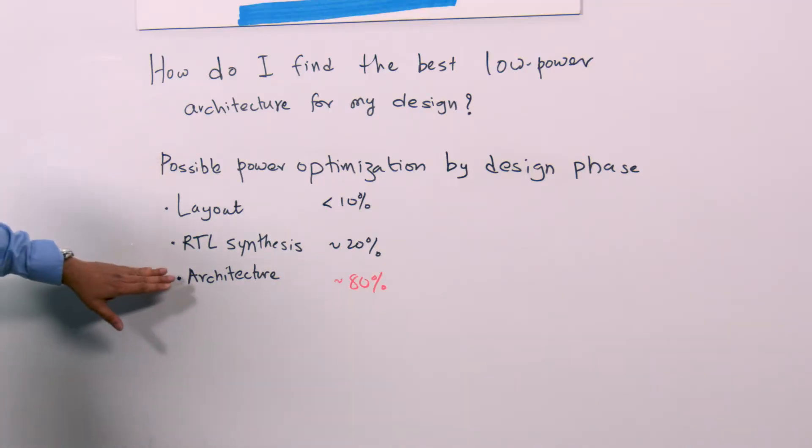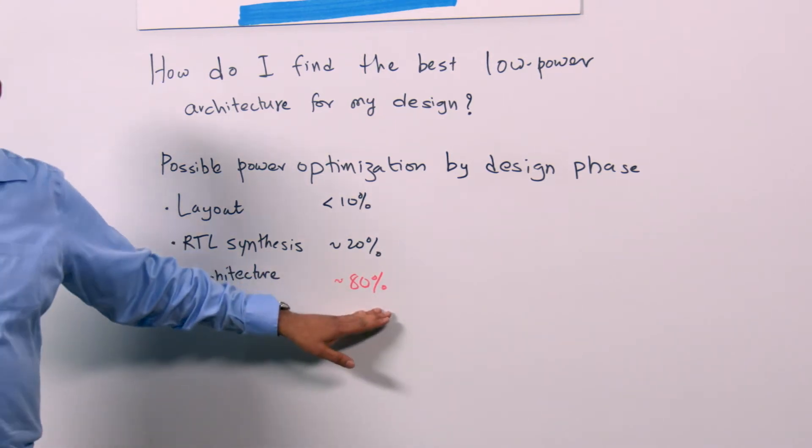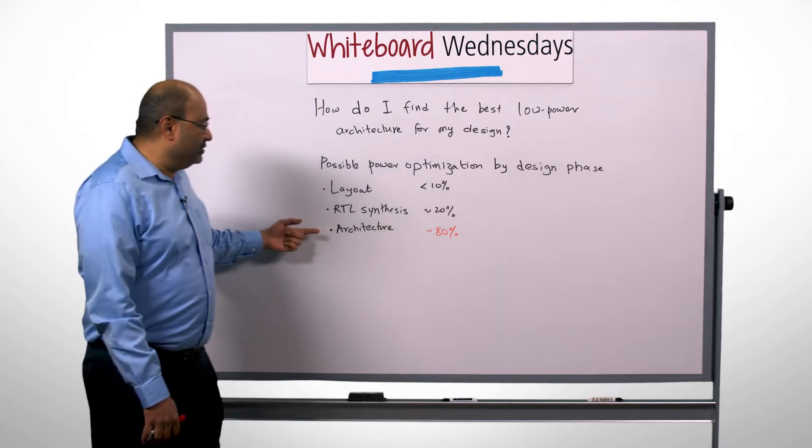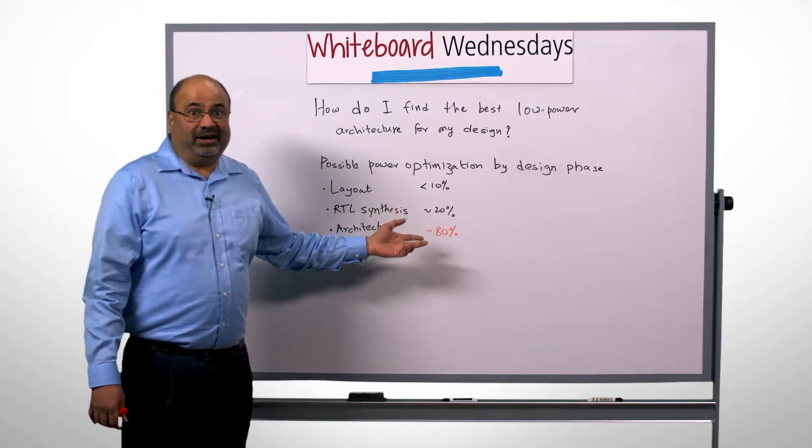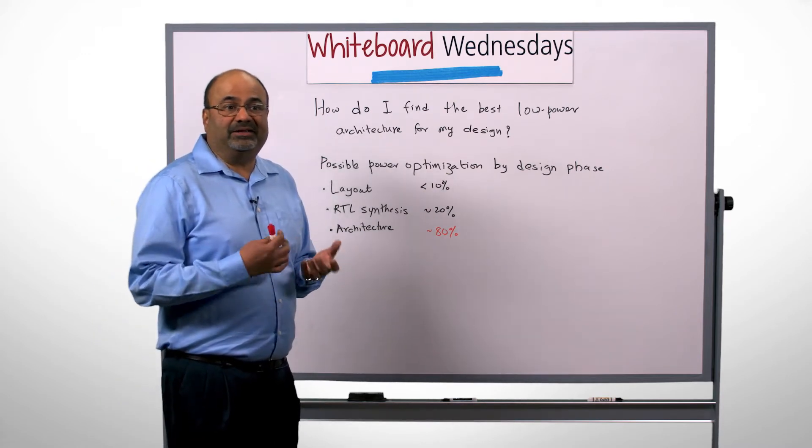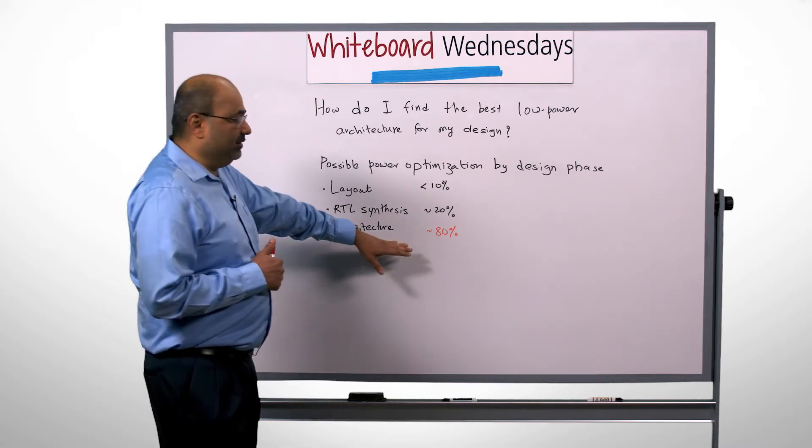But if you're in the architectural phase, the choices you make in this phase affect the power by up to 80%. So if you make a wrong choice of architecture in your design, you might miss your target by a huge margin and it might be extremely difficult to get back to your target.